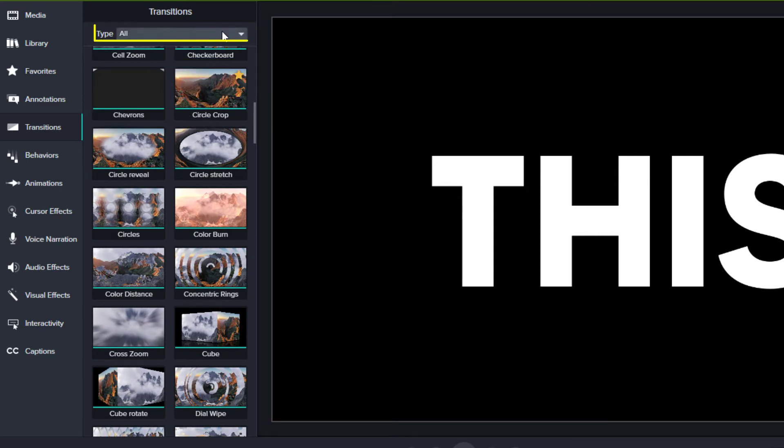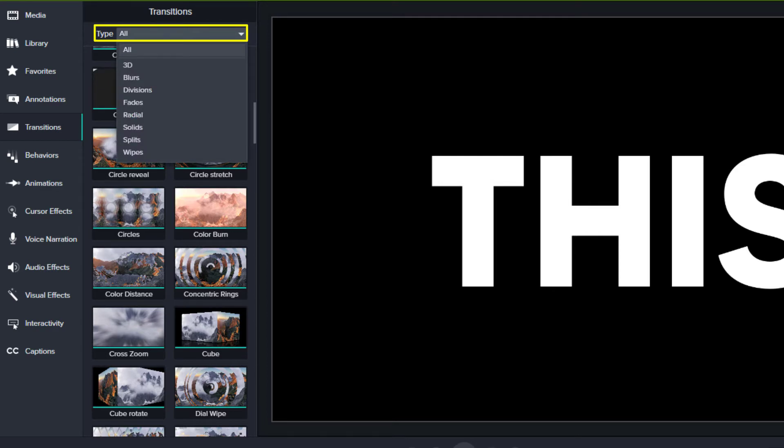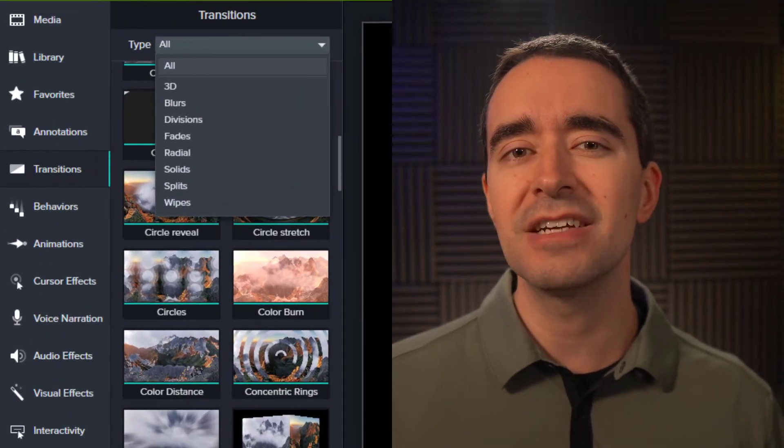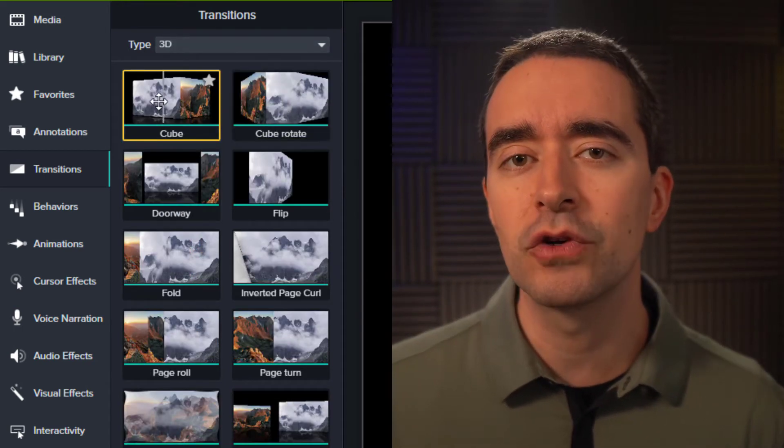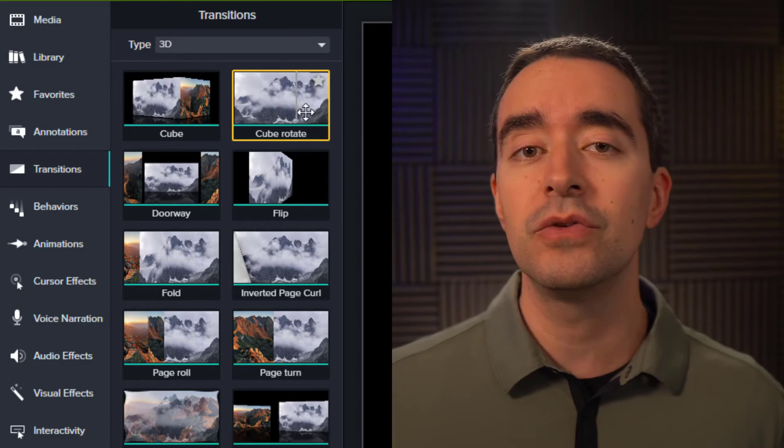You can also filter the list of transitions by using the drop-down menu at the top. Camtasia provides eight different groups of transitions. If you find a group that you like, then maybe you spend more time in that group rather than taking time in a style that you don't like.